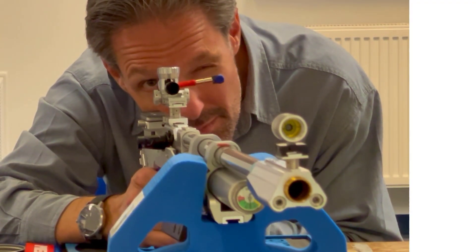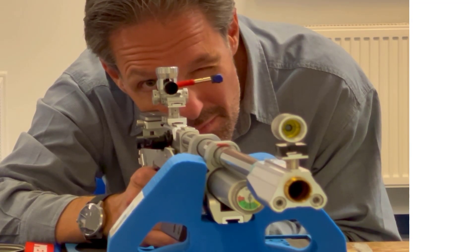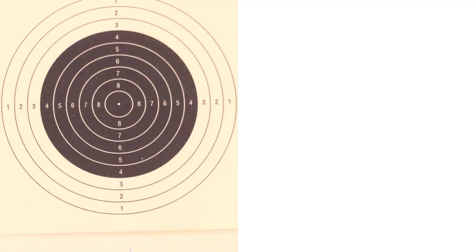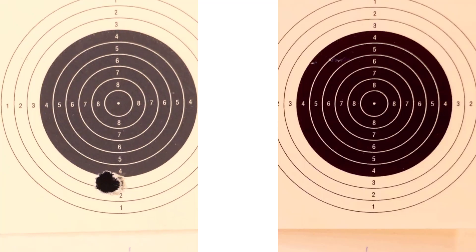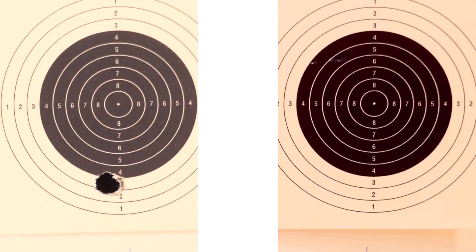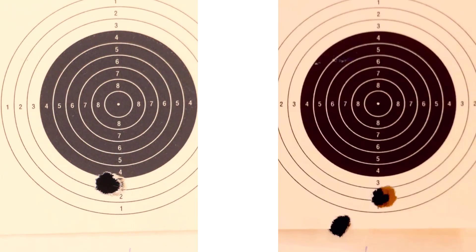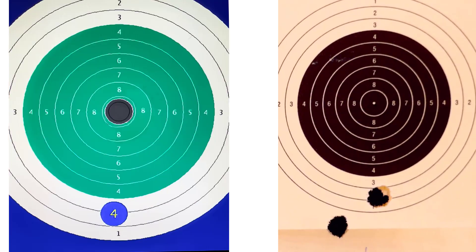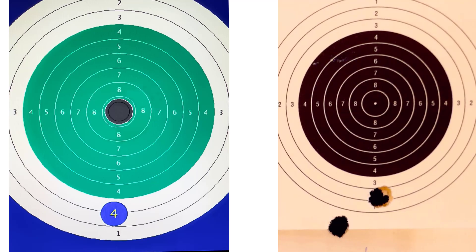We shoot at paper targets and film in slow motion, and we get different results. Both Diabolos can fly into one hole or hit the target at some distance. The electronic always evaluates the first impact. The paper target shows both bullet holes.